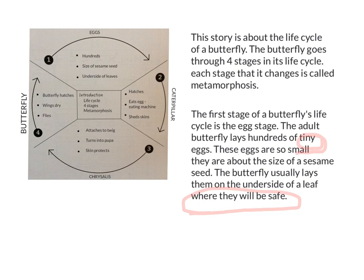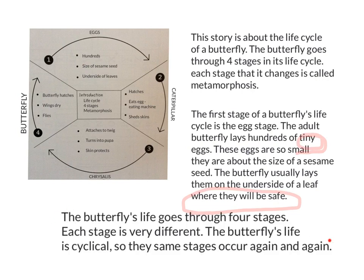You would keep going in this way until you had included all of your ideas in your cyclical map — your introduction, your first paragraph about eggs, your next paragraph about caterpillars, your next paragraph about the chrysalis, and then a paragraph about the butterfly stage. Now I'm going to show you about writing the summary, which would be your sixth paragraph. The summary is where I remind the reader about all the things I've written about in my story, but I don't introduce any new information.